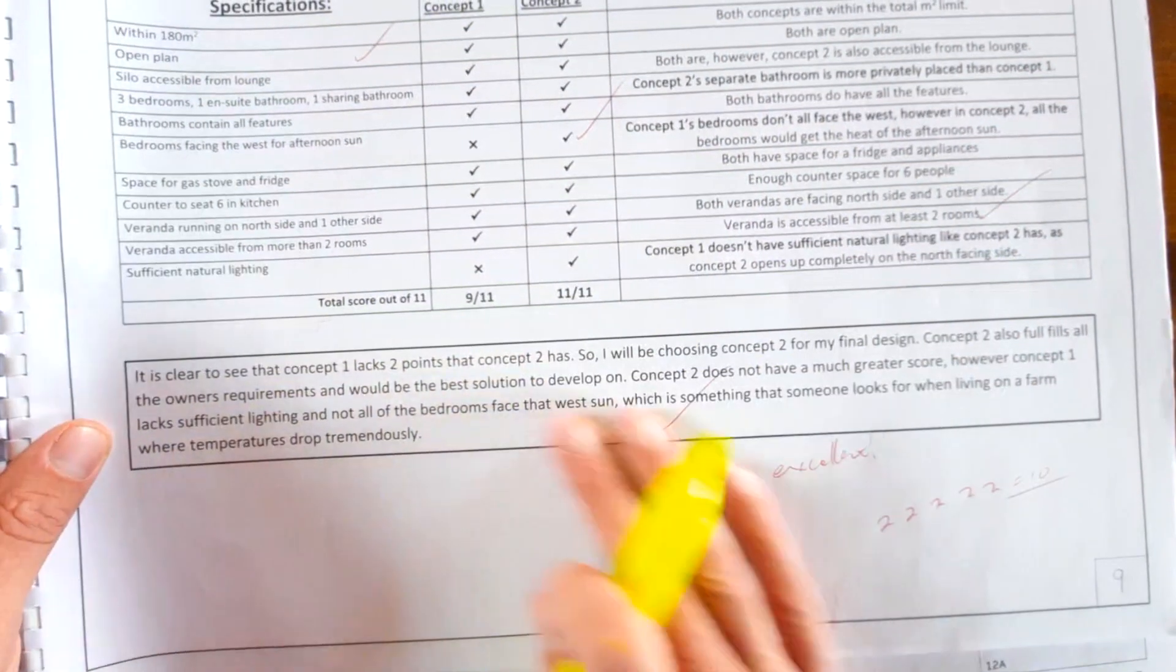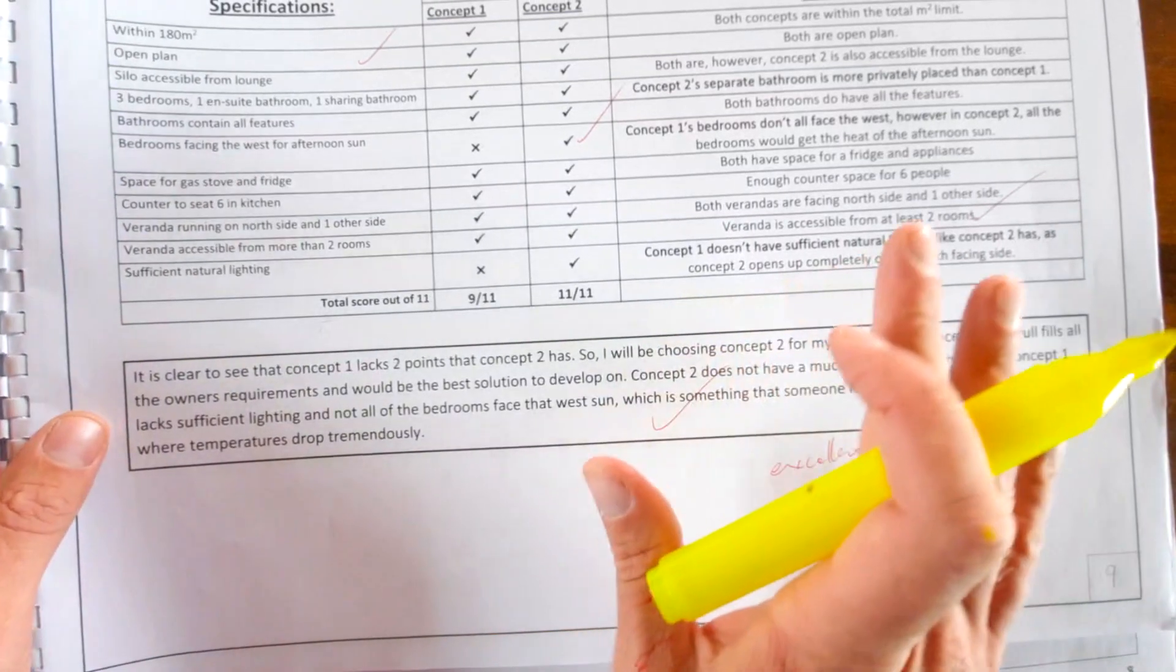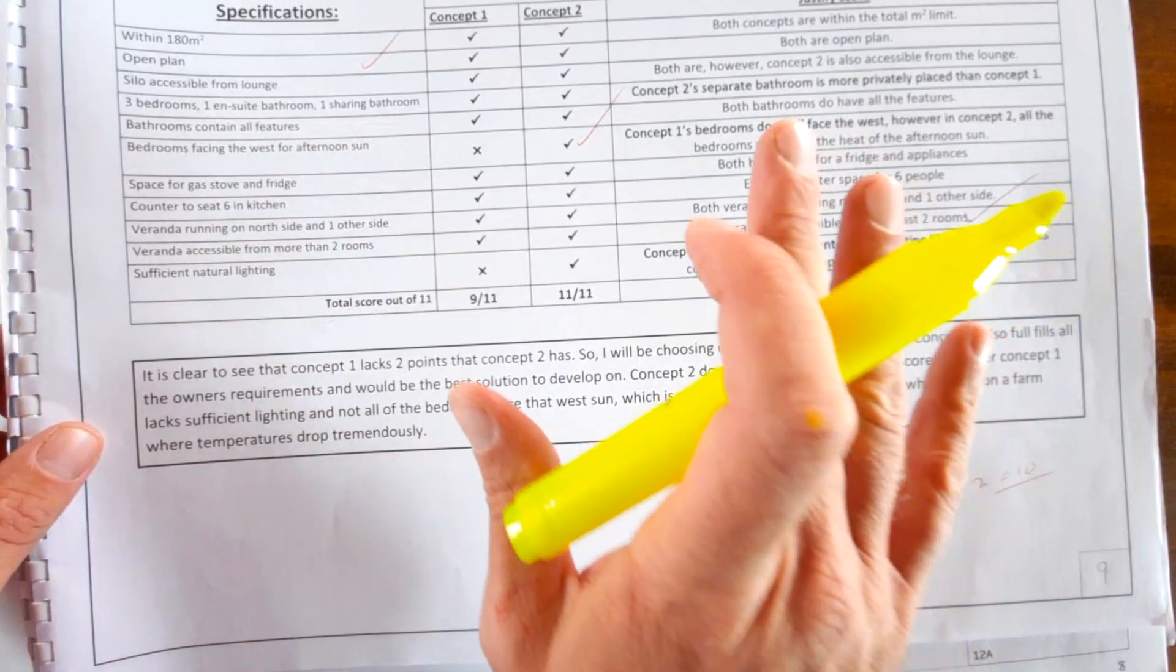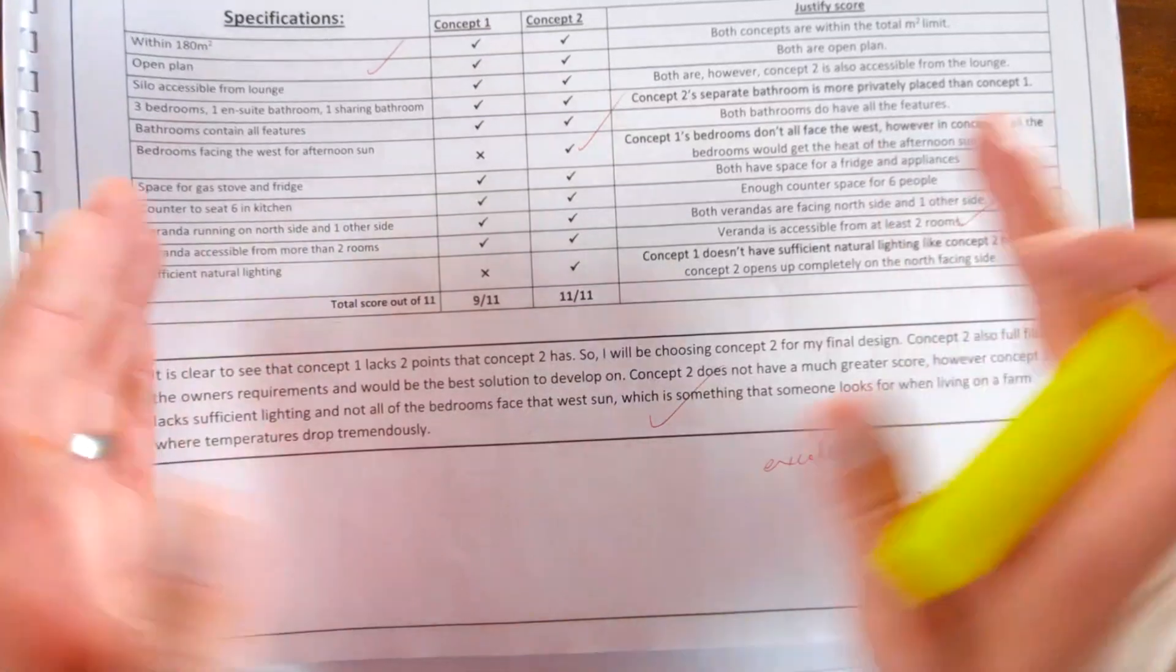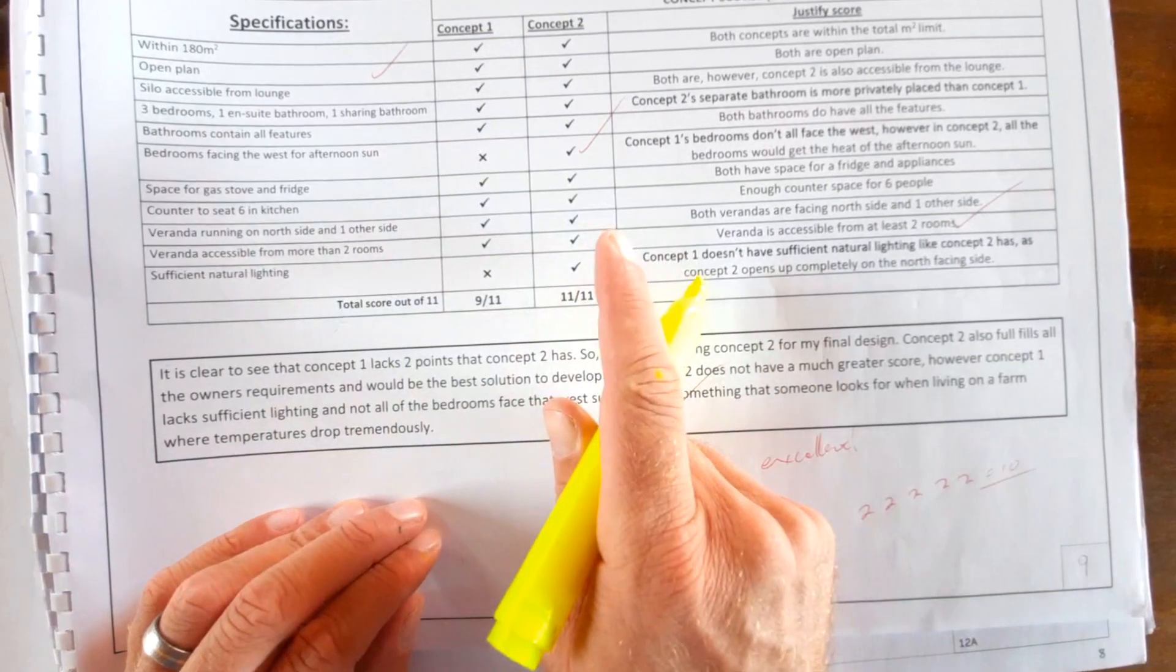If you do it as easy as this, you're going to get 10 out of 10, and you're going to absolutely nail your evaluation and your selection of your freehand concepts. Now it's your turn.